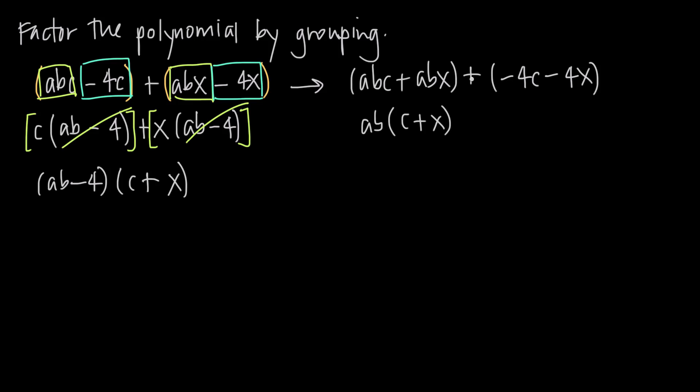Here we can pull out a negative 4, so we'll get plus a negative 4 or just minus 4, multiplied by the quantity C plus X. We have a C plus X because we pull out the entire negative 4, leaving us with just a positive X, so C plus X. And we factored.